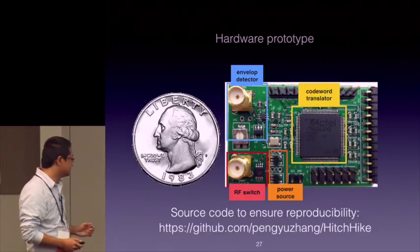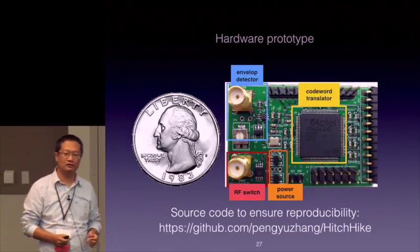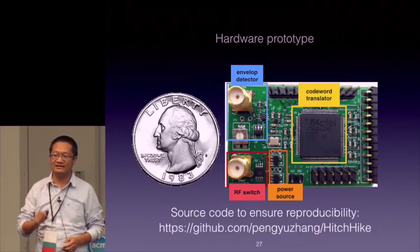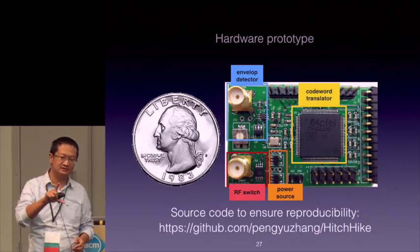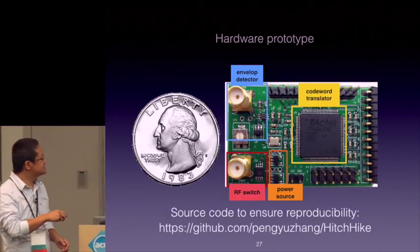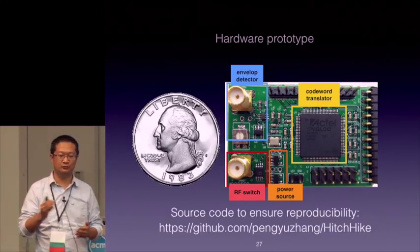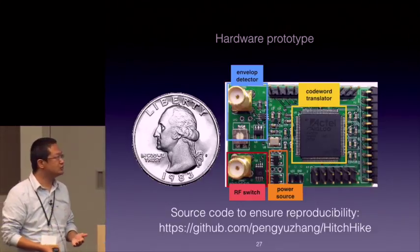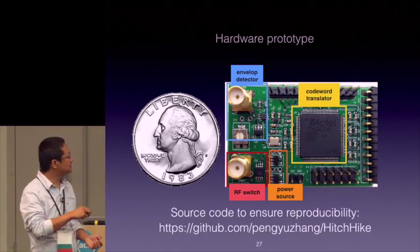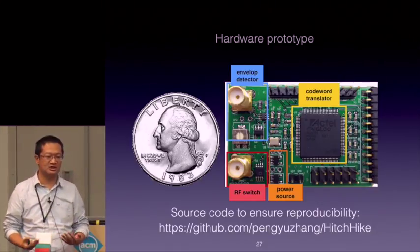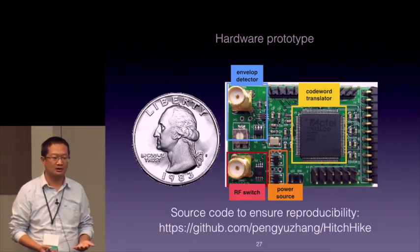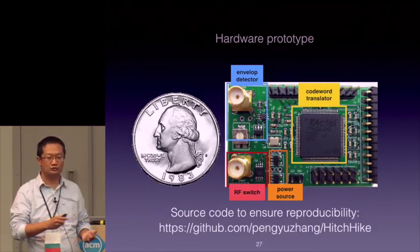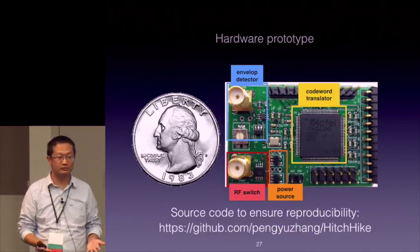This is a hardware prototype of our system. It has four major modules. The first module is an envelope detector, which identifies exactly when the Wi-Fi excitation signal starts. The second module is an RF switch, which performs signal reflection and embeds the tag information. The third module is an FPGA which runs the codeword translator. The last module is the power management module. The hardware and software of this platform is available online to ensure the community can reproduce our results.